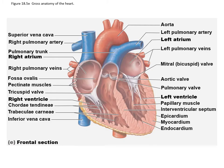This anterior cutaway view of the heart will give you a lot of information. Coming into the heart, the superior and inferior vena cava — the superior vena cava bringing blood back from the upper part of the body, the inferior vena cava bringing blood back from the lower part — come in together into the right atrium.